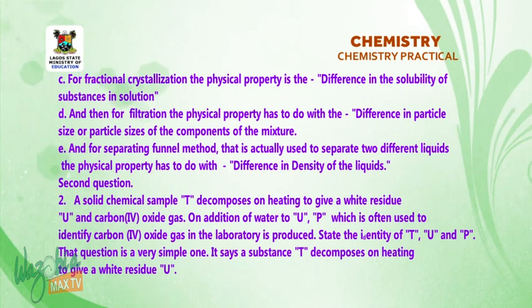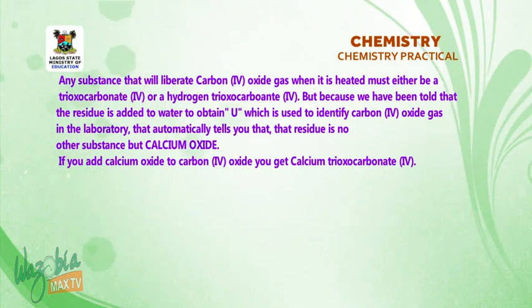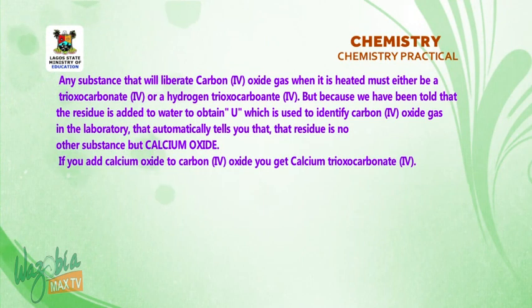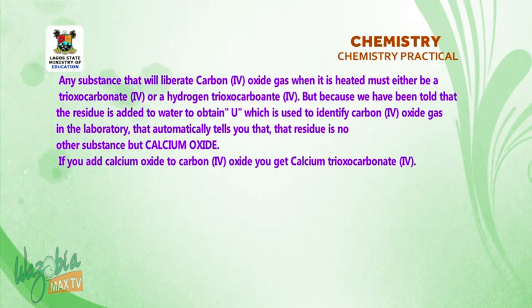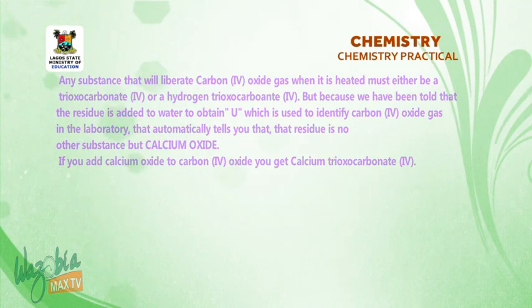That question is a very simple one. It says a substance T decomposes on heating to give a white residue U and carbon(IV) oxide gas. Any substance that will liberate carbon(IV) oxide gas when it is heated must either be a trioxocarbonate(IV) or a hydrogen trioxocarbonate(IV). But because we have been told that the residue is added to water to obtain P, which is used to identify carbon(IV) oxide in the laboratory, that automatically tells you that the residue U is no other substance but calcium oxide.